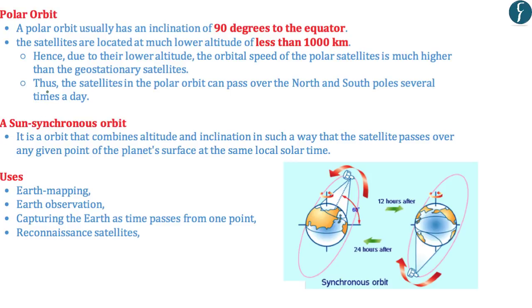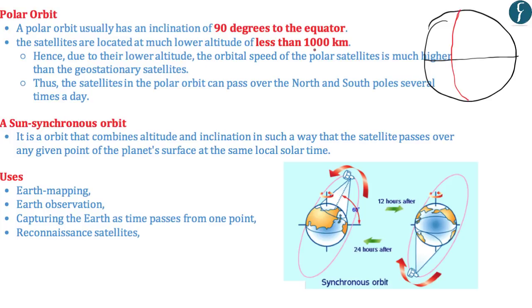Moving on to polar orbits and sun-synchronous orbits. A polar orbit usually has an inclination of 90 degrees to the equator. Satellites in polar orbits are located at much lower altitude — less than 1000 km — in contrast to geostationary orbits at around 36,000 km. Due to their lower altitude, the orbital speed of polar satellites is much higher. These satellites can pass over the north and south poles several times a day. As the satellite completes its rounds, the Earth rotates beneath the orbit, allowing successive passes to cover new strips of land.